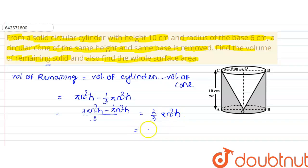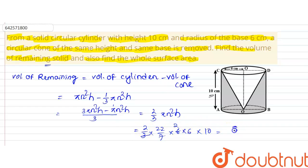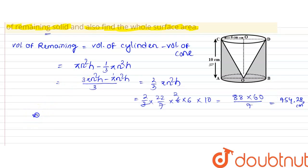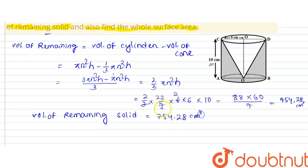Now putting in the values: π = 22/7, radius = 6 cm, so r² = 36, and height = 10 cm. So it becomes (2/3) × (22/7) × 36 × 10. Calculating: 22 × 2 = 44, 44 × 2 = 88, then 88 × 6 × 10 = 5280, divided by 7 gives 7540.28 cm³. The volume of the remaining solid is 7540.28 cm³.